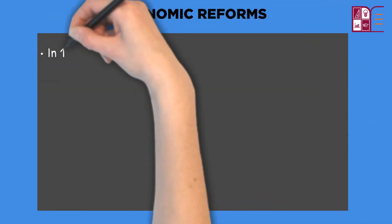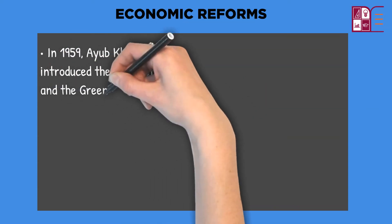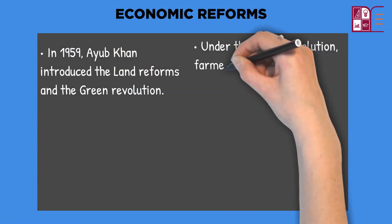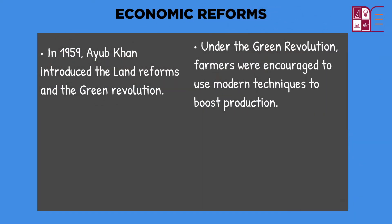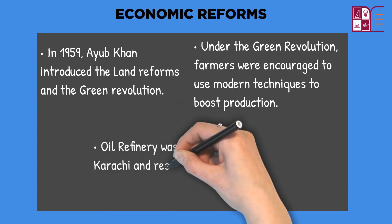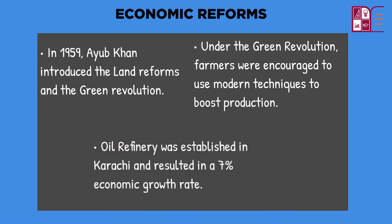Economic Reforms: In 1959, Ayub Khan introduced land reforms and the Green Revolution. The land reforms turned bigger inefficient farms into small efficient farms. Under the Green Revolution, farmers were encouraged to use modern techniques to boost production and increase income, which also helped the country's economy. However, these land reforms and the Green Revolution made many tenants jobless.